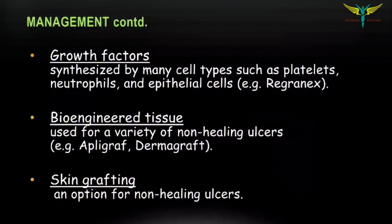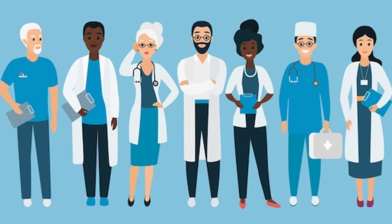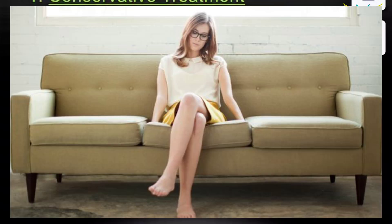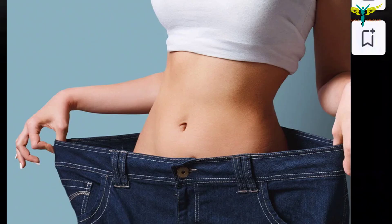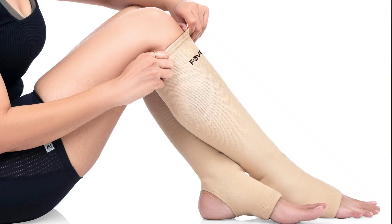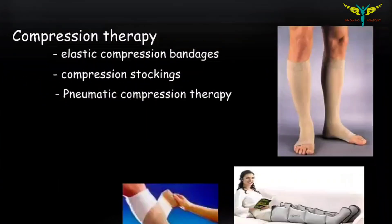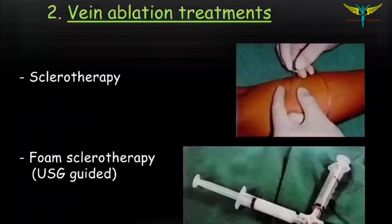If you or anyone you know has varicose veins, you should take measures so that it won't lead to venous ulcer. Try avoiding long periods of standing, avoid crossing of legs, maintain ideal body weight. If you have varicosities, use compression stockings — elastic compression bandages or pneumatic compression therapies — or follow ablation treatments like sclerotherapy or foam sclerotherapy.